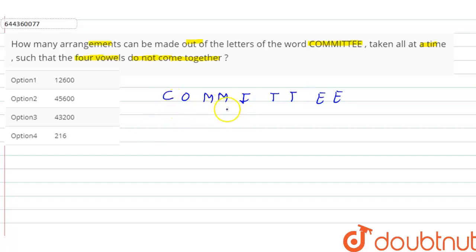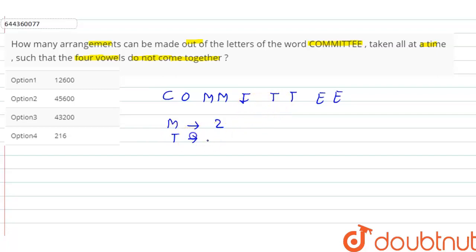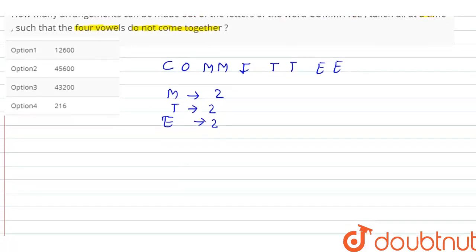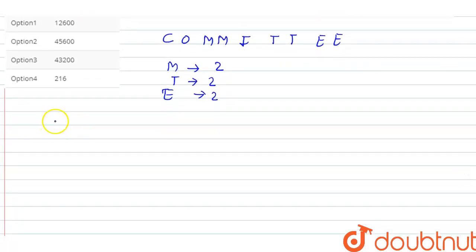Now identify the repeating letters. C is not repeating, O is also not repeating, M is repeating two times, I is not repeating, T is repeating two times, and E is also repeating two times.